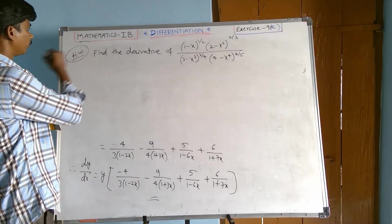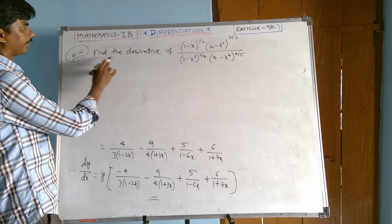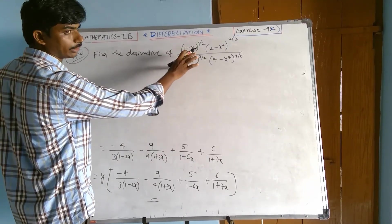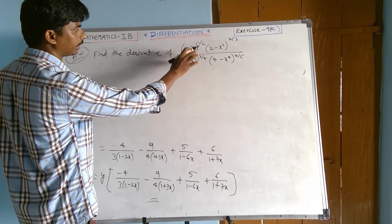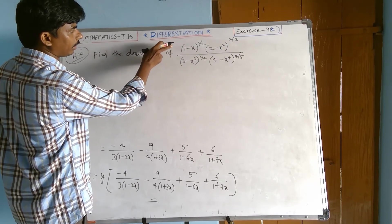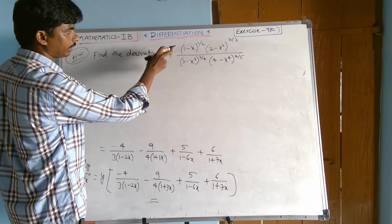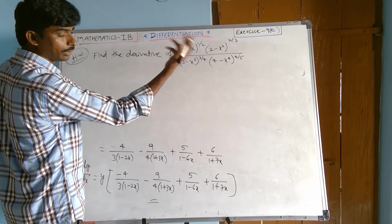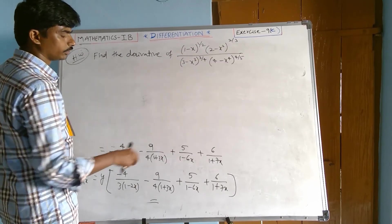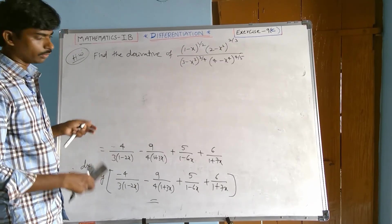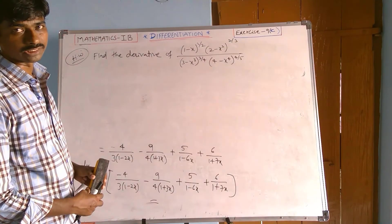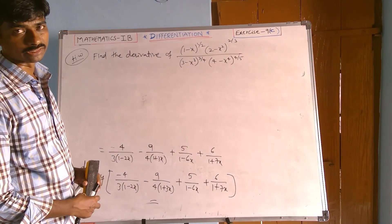The next homework problem: find the derivative using the same method — applying log(a/b) = log a minus log b, and log(a·b) = log a plus log b, then substitute values accordingly. Please subscribe to my channel, like and share. Thank you.